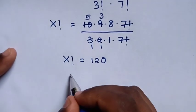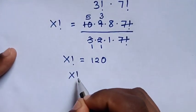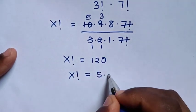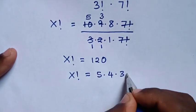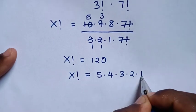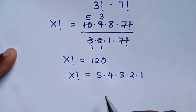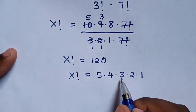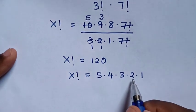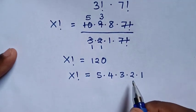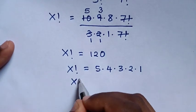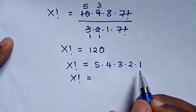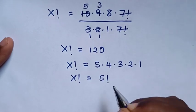In the next step, x factorial equals 120, which is the same as 5 times 4 times 3 times 2 times 1, because 5 times 4 is 20, 20 times 3 is 60, 60 times 2 is 120. So x factorial equals 5 times 4 times 3 times 2 times 1, which is the same as 5 factorial.